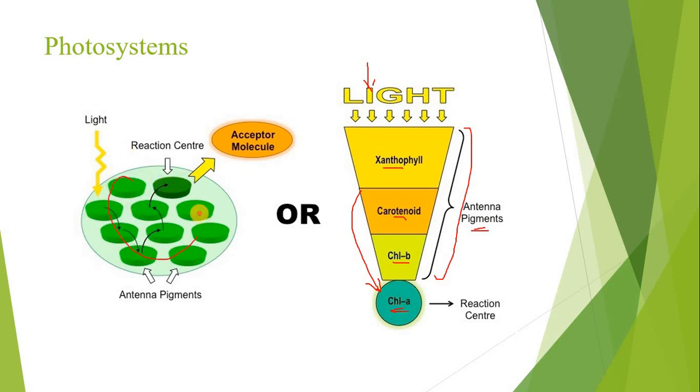Similarly, these are antenna complex, antenna pigments and light is absorbed and they transfer them to the reaction center. What happens in reaction center? We discuss in light reaction. That electron excite.